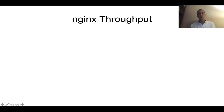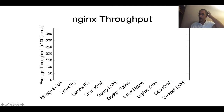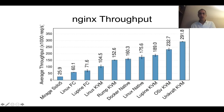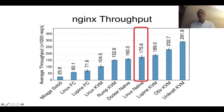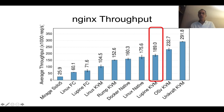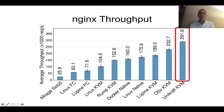Some performance numbers to do with Nginx throughput now, again against a number of different projects and Linux as well. We are measuring throughput in thousands of requests per second on the y-axis. Linux KVM as a baseline is about 100,000 requests per second. Linux native, non-virtualized, is about 175,000. And Unicraft is all the way up with almost 300,000 requests per second.